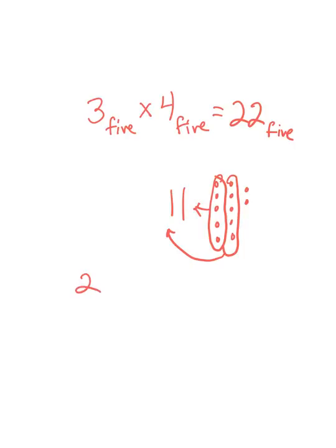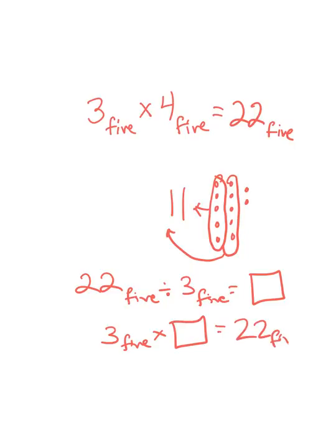Now I can do a division problem: 22 base 5 divided by 3 base 5 equals something. And the missing factor approach says I can rearrange this division statement to be a multiplication statement, so 3 base 5 times something is equal to 22 base 5. And I notice, oh, 3 base 5 times 4 base 5, so this 4 is the missing factor, which means that 4 is also the quotient of the division statement.